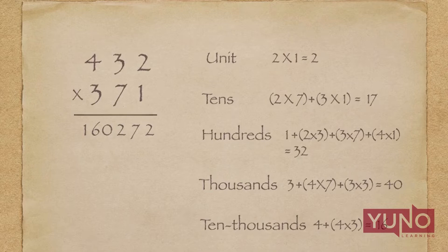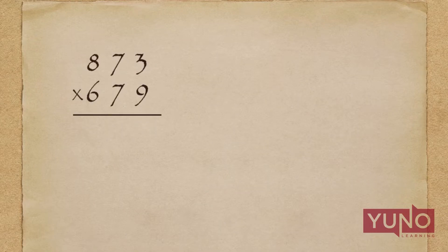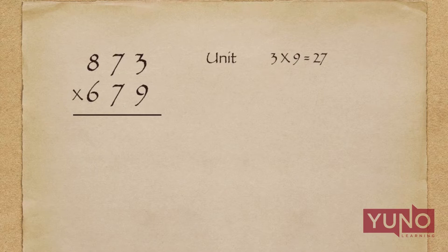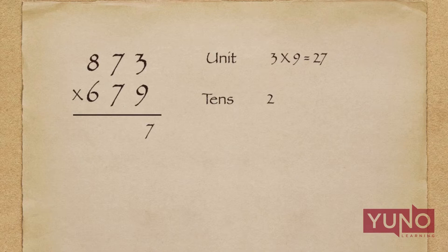Let's move to our next example. Suppose I have to multiply 873 by 679. As the first step, I will multiply the unit places — that is 3 × 9 = 27. I will write 7 in the answer and 2 will be the carry, which will be used in the next step.